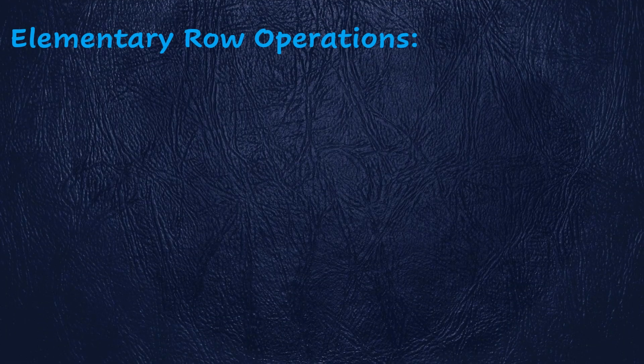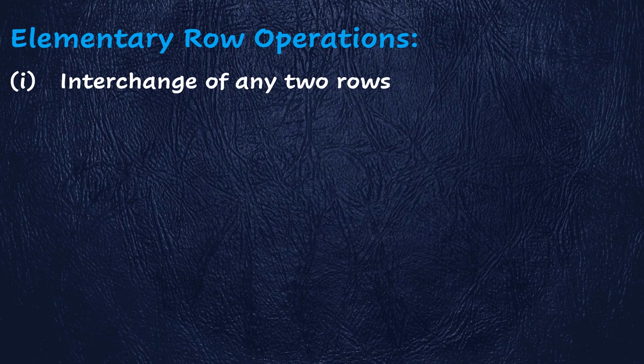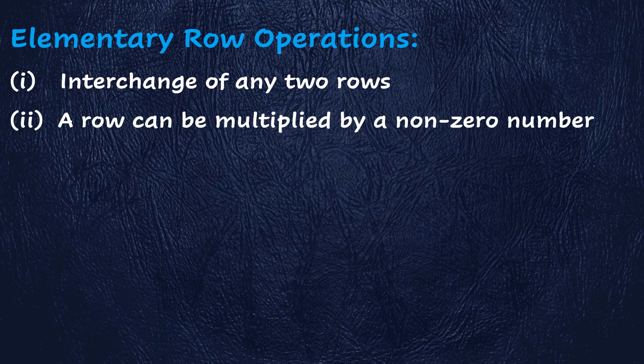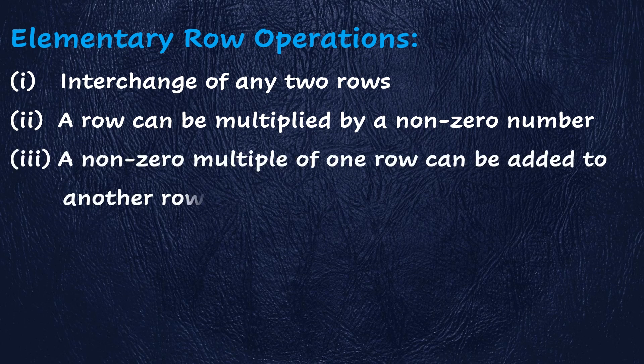Let's have a glance at elementary row operations. The first is interchange of any two rows. The second is that a row can be multiplied by a non-zero number. The third is that a non-zero multiple of one row can be added to another row.